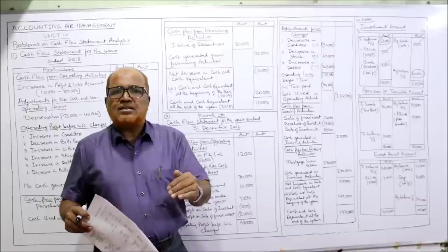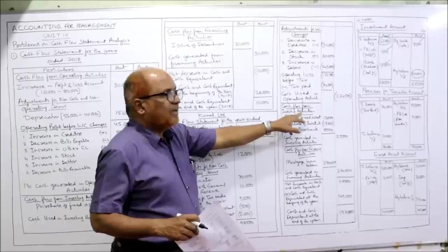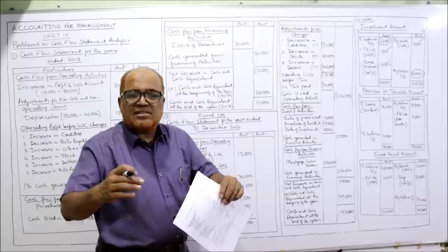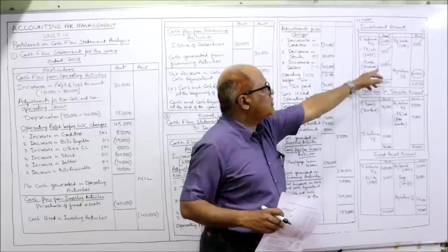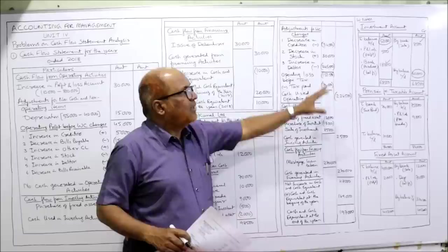Purchase of investment and sale of investment both should be taken under investing activity. Purchase of investment 18,000 — cash outflow, in bracket. Sale of investment 8,500 — cash inflow, without bracket. Both purchase and sale taken under investing activity. That's the investment account explained. The second account is provision for taxation.